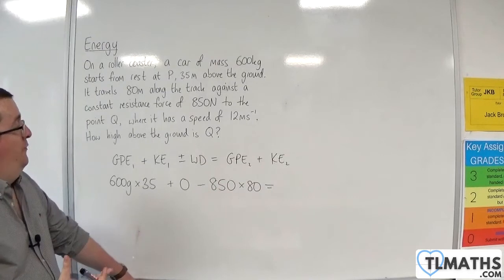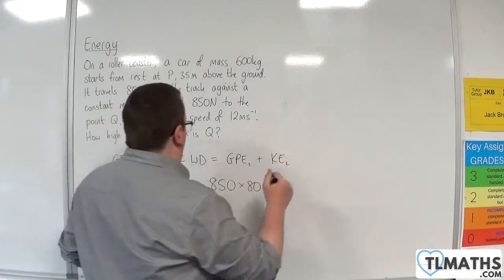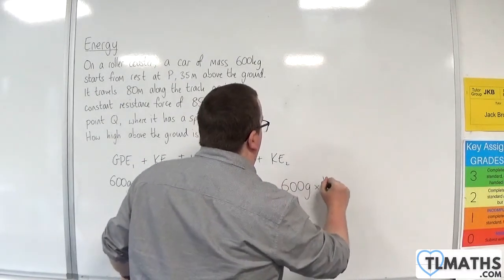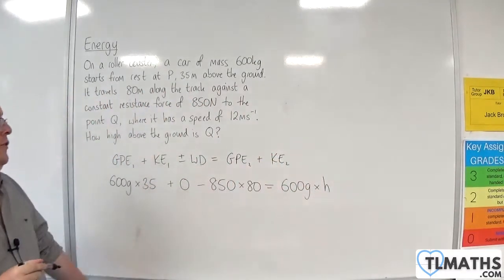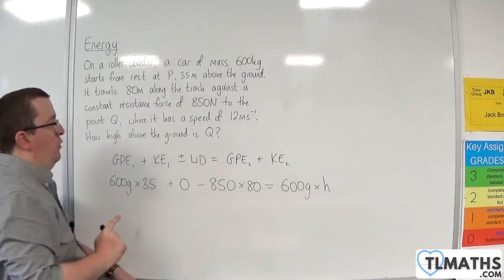Now, that's equal to the final gravitational potential energy, which again will be MGH. So 600G times by H, and it is this H that I'm interested in. Okay, that will tell me the height above the ground at the point Q.